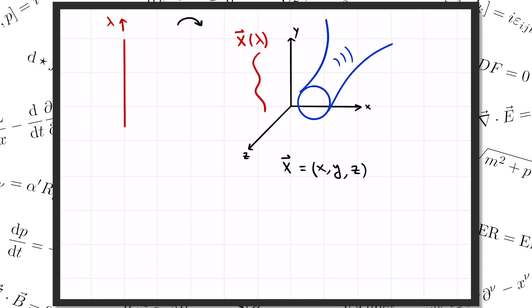When we graduate to our 2D surface instead of a curve, we need another parameter. Let's call it sigma. Then we specify the surface by a function x of sigma and lambda. Our wand here is a closed loop, so let's make the sigma direction a circle. Then our parameter space is a cylinder, and our function tells us how each point (sigma, lambda) in the parameter space gets mapped to a point in 3D space. And that's how we describe the shape of our surface. So the question we need to answer is: if someone hands us a surface by writing down its function x of sigma, lambda, how do we compute its area?